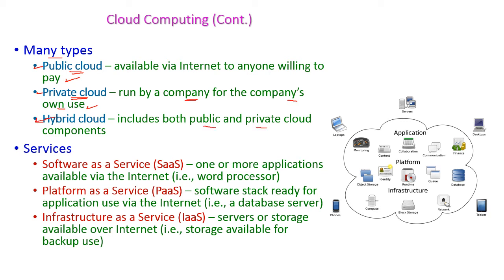Cloud computing provides different services that fall under three categories. First is Software as a Service (SaaS), where one or more applications are available via the internet. Second is Platform as a Service (PaaS), a software stack ready for application development available through the internet. Third is Infrastructure as a Service (IaaS), where servers and storage are available over the internet.